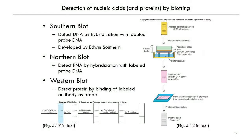That can be useful for detecting nucleic acids by blotting. Blotting techniques are some applications for nucleic acid hybridization methods. You can detect nucleic acids and proteins by blotting, either using radioactively labeled probes or chemically labeled probes. In a southern blot, you can detect DNA by hybridization to a labeled probe DNA. This was developed by Edwin Southern. In southern blotting, you do electrophoresis of your DNA sample, then probe with your specific DNA probe and see where it hybridizes to the target.